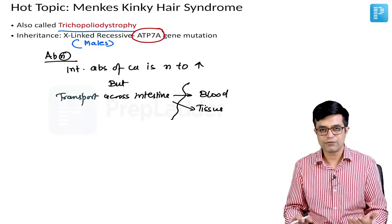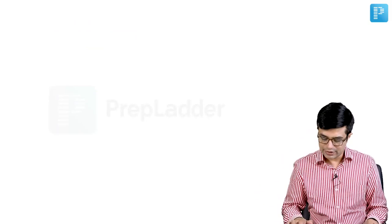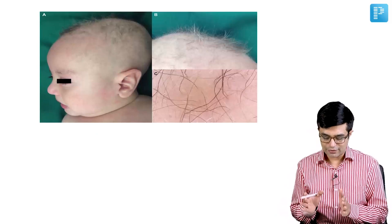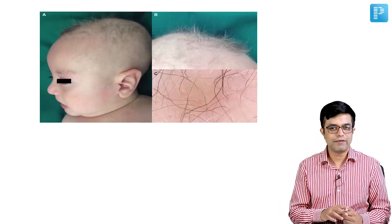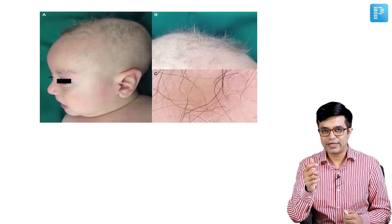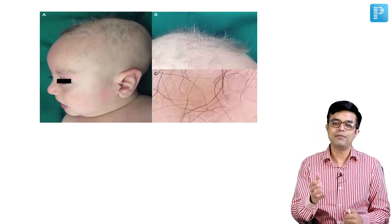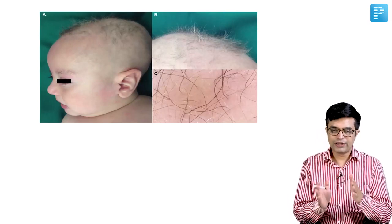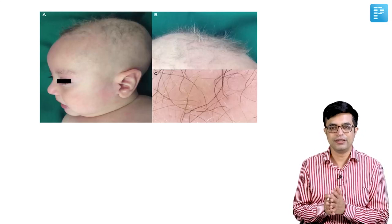If you look at the clinical features, first of all the hallmark of these patients is abnormal hair, and that is why the name is Menkes Kinky Hair Syndrome. If you look at the hair of these children, in the first year of life you will have hair which are very thin, which are sparse, they are not very dense. Some of them may show hypopigmentation. They will be brittle and easily pluckable. Such kind of a pattern along with neurological problems is the typical manifestation you find in Menkes Kinky Hair Syndrome.